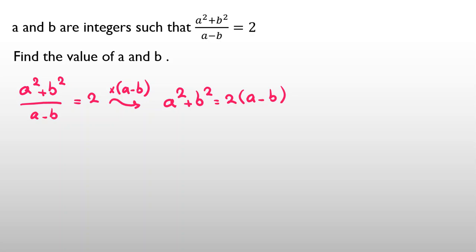Now I take all things to left hand side, so it will be a squared minus 2a plus b squared plus 2b equals zero. Because if you take negative 2b to the left hand side, it will be plus 2b.